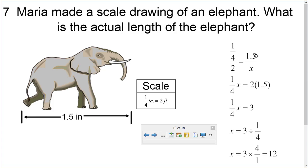So the height of the elephant that Maria drew is 1.5 inches. So we need to know how many feet is that actually going to be. Well, we cross multiply. 1 fourth times x is 1 fourth x. 2 times 1.5 that'll give us 3. So 1 fourth x equals 3. Divide both sides by 1 fourth, and I'll have 3 divided by 1 fourth.